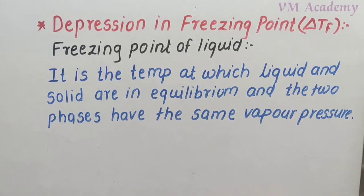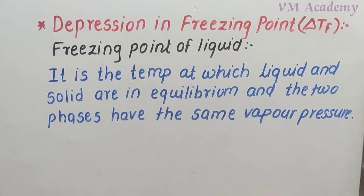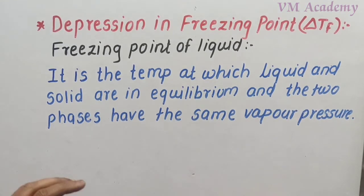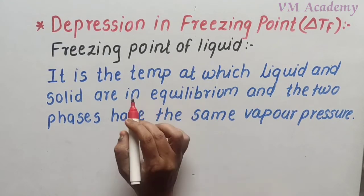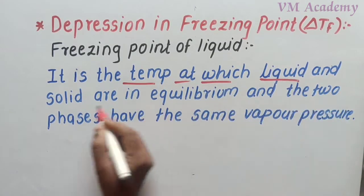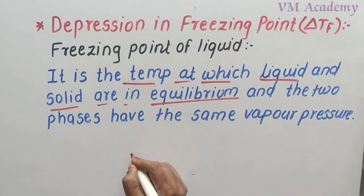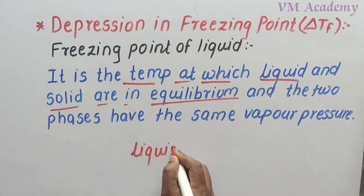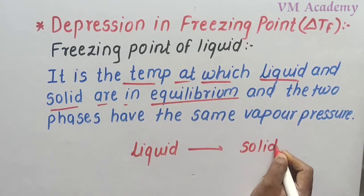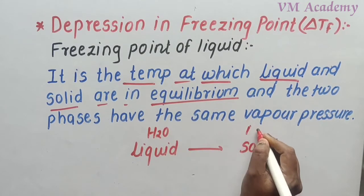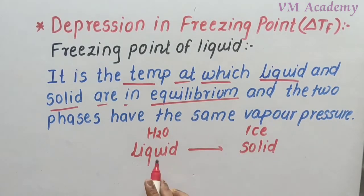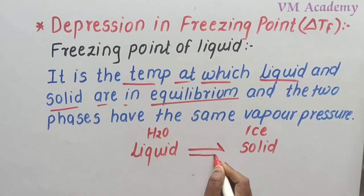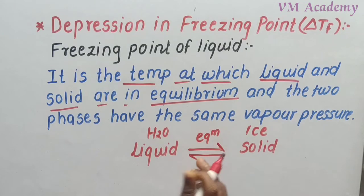The first was vapor pressure lowering, the second was boiling point elevation, and today we need to see depression in freezing point. Depression means decrease. So first, the question arises: what is the freezing point? Freezing point will be for a liquid. The freezing point is the temperature at which liquid and solid are at equilibrium — the liquid is converting to solid.